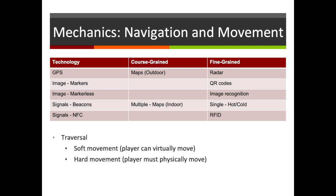You can also use signals in the form of near field communication — for example using a device to read RFID tags to trigger when you've reached a particular point. These latter technologies — images and signals — tend to be better for an indoor setting where GPS is not available or accurate. In an outdoor setting GPS is typically pretty good; it's only if you want really fine-grained control that you go to one of these other technologies.